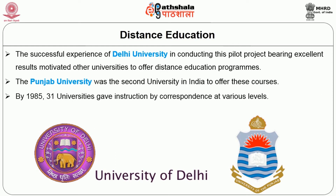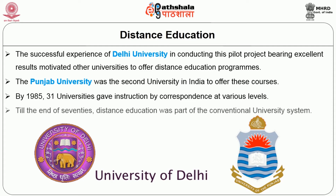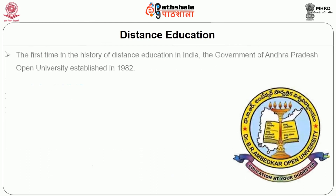The successful experience of Delhi University in conducting this pilot project bearing excellent results motivated other universities to offer distance education programs. The Punjab University was the second university in India to offer these courses. By 1985, 31 universities gave instructions by correspondence at various levels. Till the end of the 1970s, distance education was part of the conventional university system. For the first time in the history of distance education in India, the government of Andhra Pradesh established an open university in 1982.